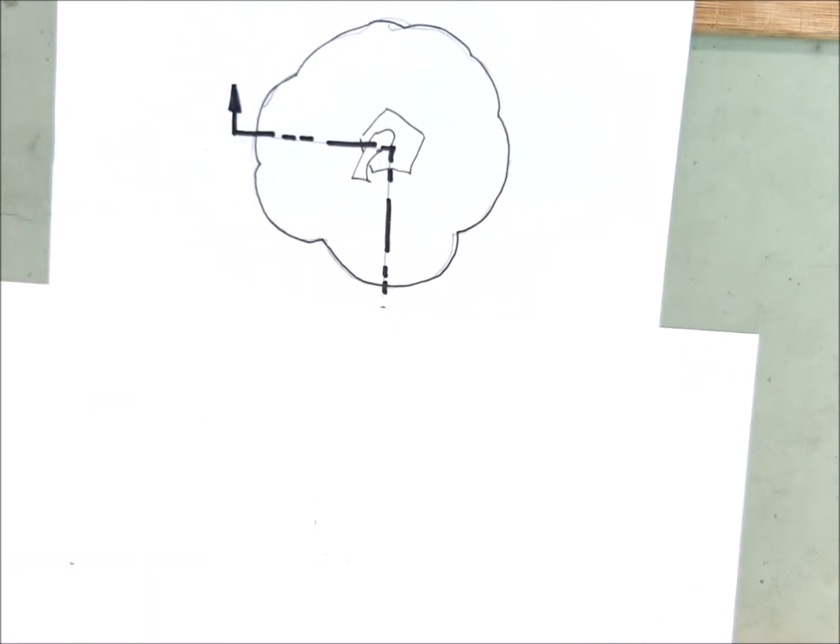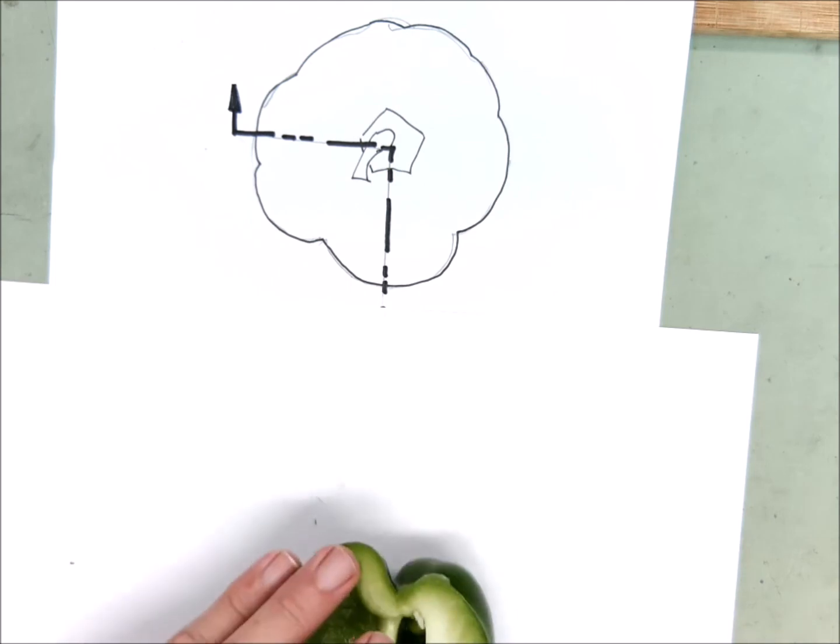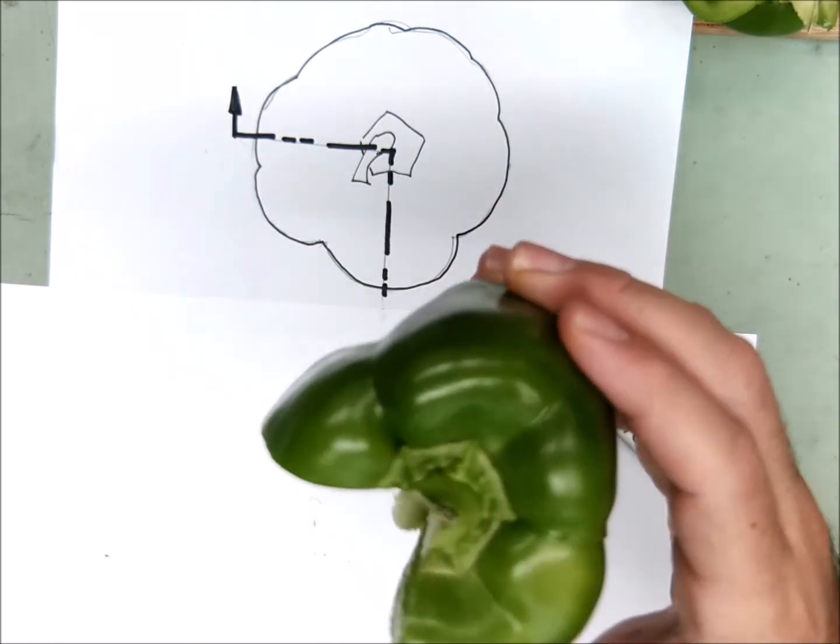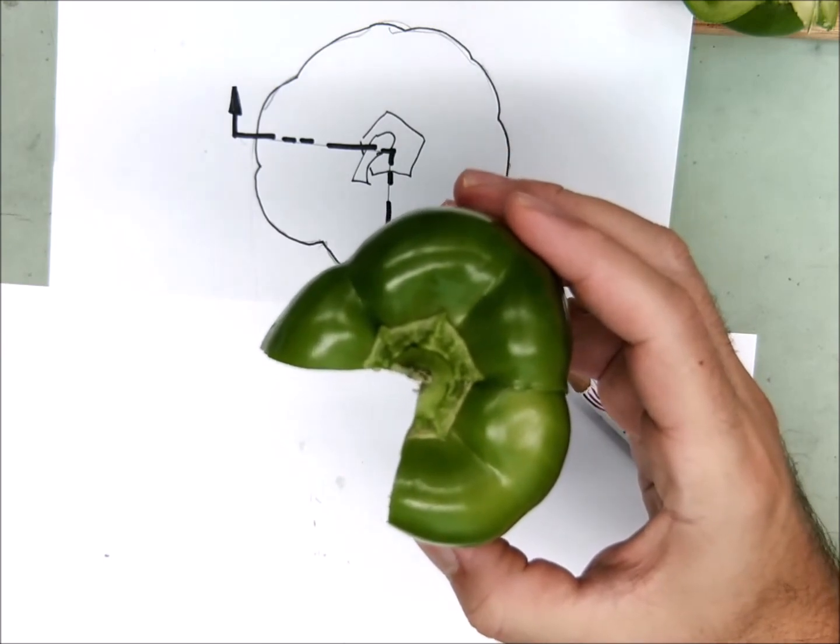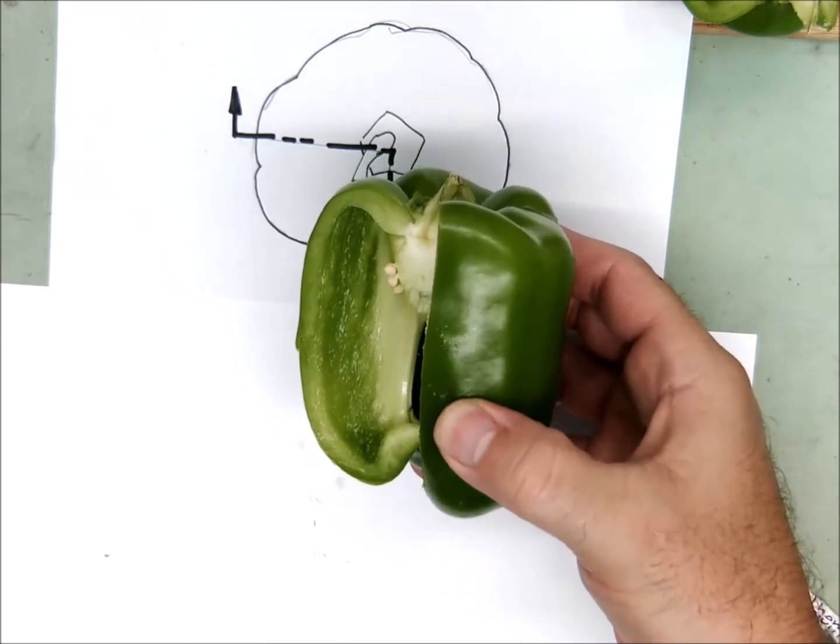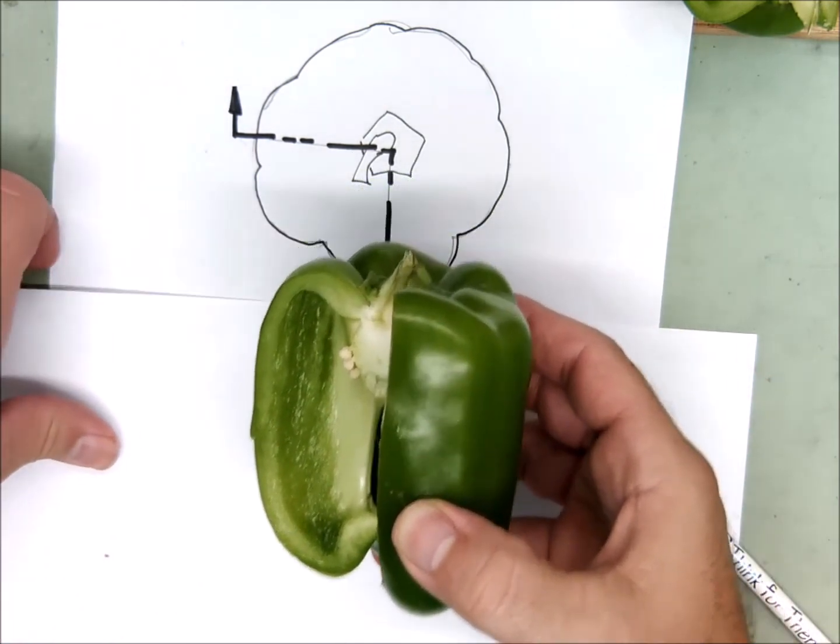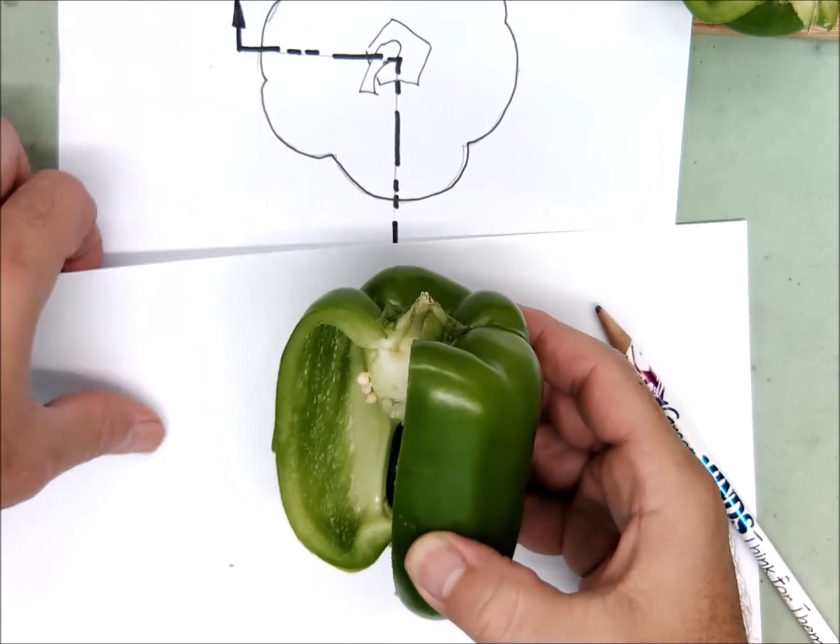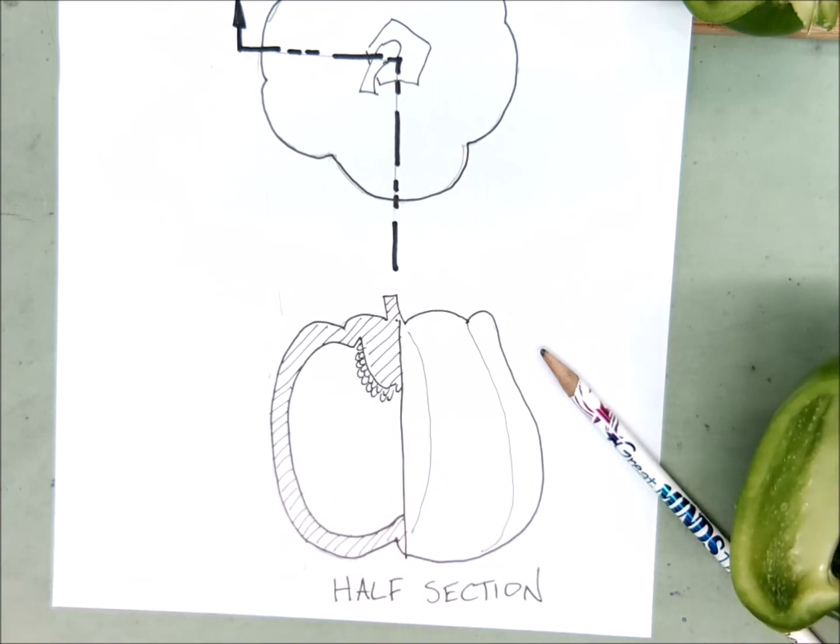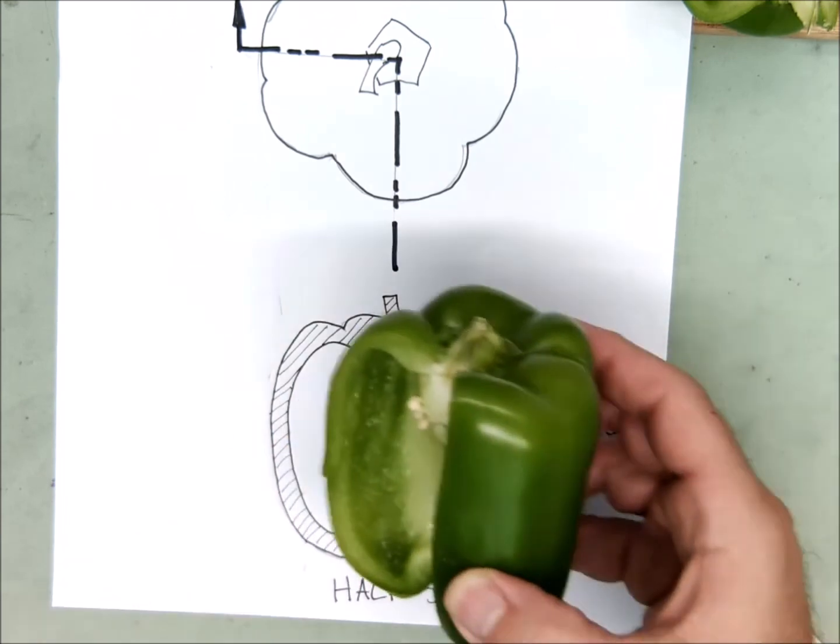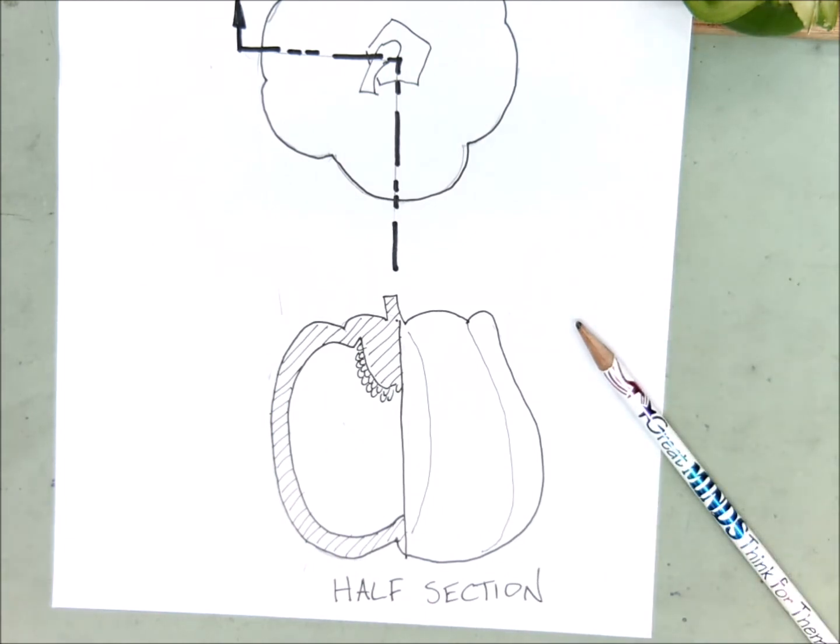Well we can find out. I'm going to do some pepper reconstructive surgery here. You see I've turned it into a section where I only cut out a quarter. Now there's a quarter missing and when I look at it dead on, the left side is in section, the right side is not. The right side is just what's on the outside. So the drawing that would produce is going to look like this - the left side is in the section, the right side is not. Just what's on the outside, what's on the inside. Half section.